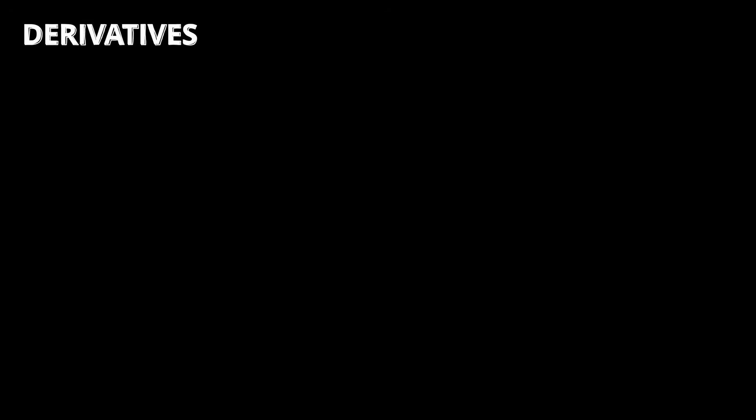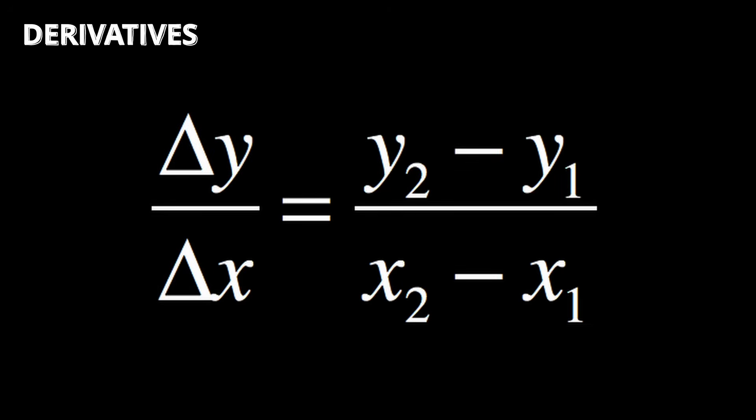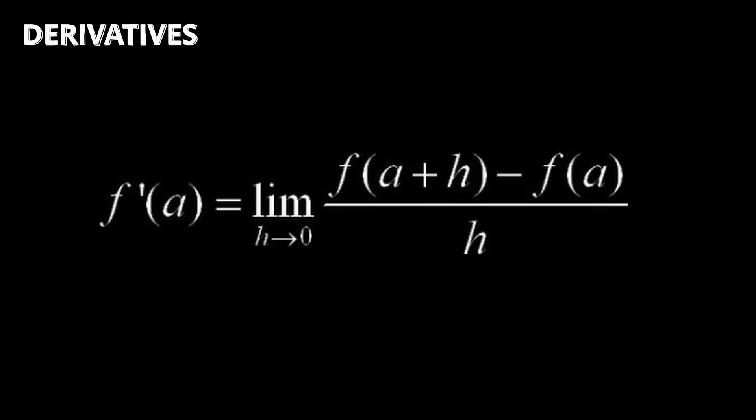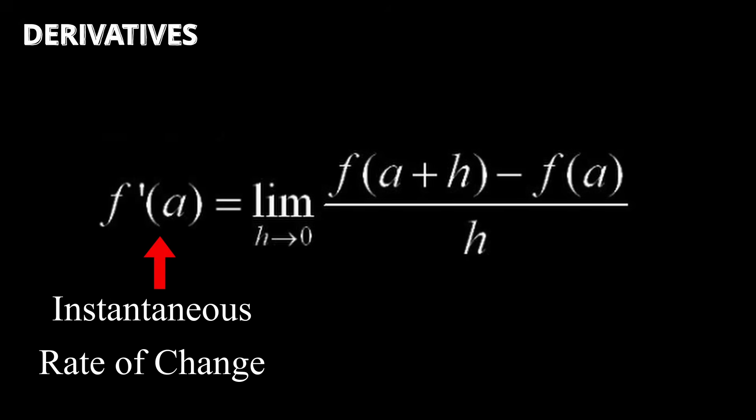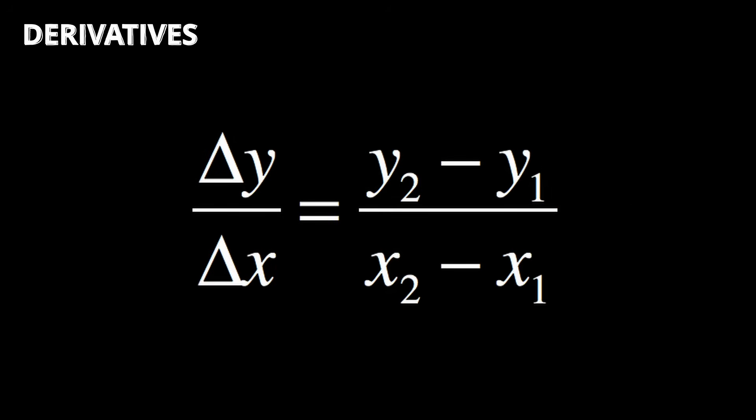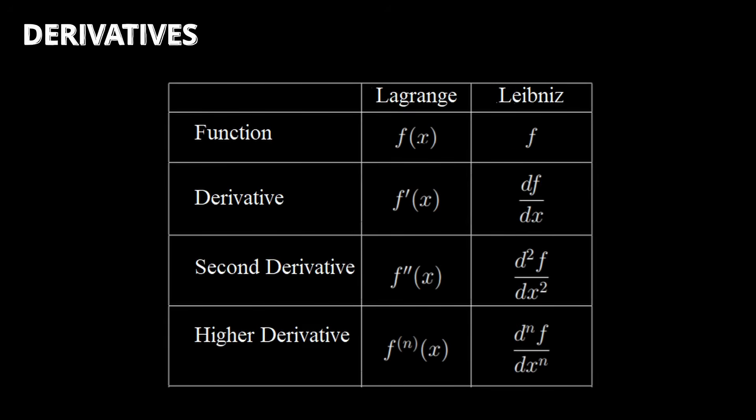Derivatives. Derivatives are what we use in calculus to observe the rate of change of functions. This is especially useful since it allows us to analyze the instantaneous slope of functions at certain points, as opposed to what we used to do before calculus, which was simply taking average slope. Derivatives are usually denoted using the Lagrange and Leibniz notation like this. You can even take higher order derivatives, which is just taking the derivative of the derivative to get the slope of the slope.